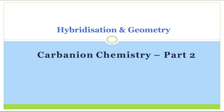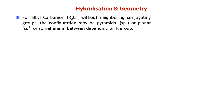This is chemistry part 2, where we will discuss hybridization and geometry of carbanions. In part 1 we covered some preliminary ideas about carbanions. For part 1, the playlist link is in the description box. Now we are going to discuss hybridization and geometry.